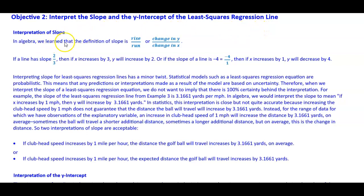In algebra, we learn that the definition of slope is the rise over the run, or the change in y over the change in x. Now if a line has a slope of 2 over 3, then if x increases by 3, y will increase by 2.